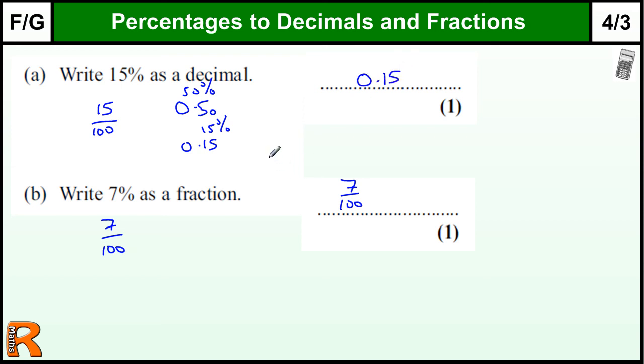Or as I often tell my students, think about it as changing pounds into pence. 15 pence changed to pounds is 0.15 pounds, so it's just essentially divided by 100.